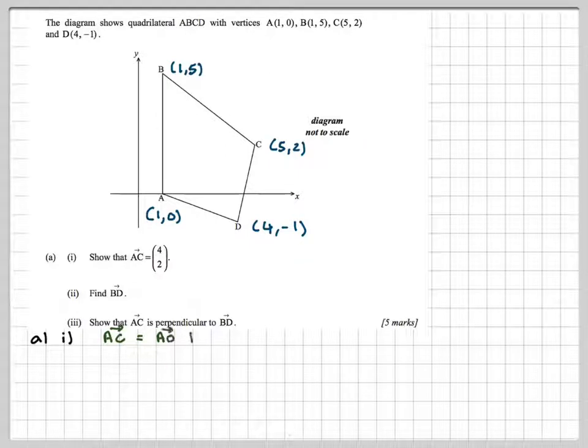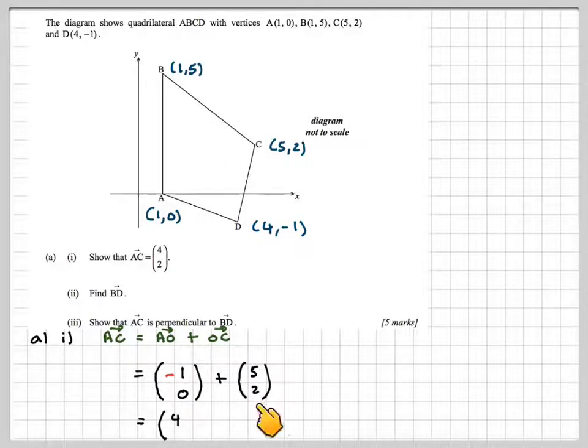AC is the same as going A to O plus O to C, so you are going against OA, so it becomes (-1,0), and then you have to add OC, which is (5,2). -1 + 5 is 4, and 0 + 2 is 2. That's good because we have to actually show that, so we know that's true.